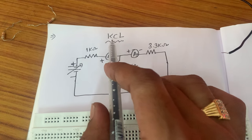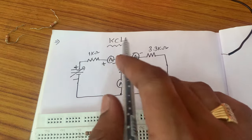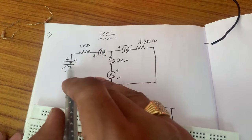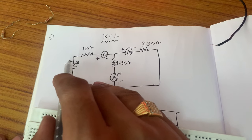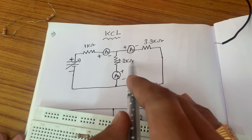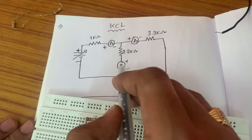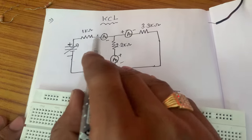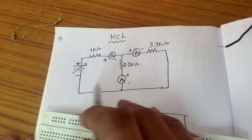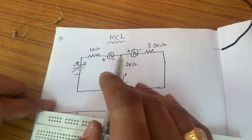Hello everyone, today we are going to conduct the Kirchhoff's Current Law experiment, that is KCL. This is the circuit diagram of KCL. This is the RPS supply positive terminal and the negative terminal. We have 1 kΩ, 2.2 kΩ, and 3.3 kΩ resistors, and these are the ammeters used to find the current passing through each and every resistor. After connecting the circuit, we will apply the voltage and measure the currents across each resistor.